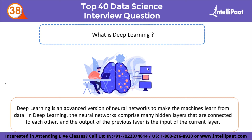What is deep learning? Deep learning is a subset of machine learning which is essentially a neural network with three or more layers. It is an advanced version of neural networks where the neural networks comprise many hidden layers connected to each other, and the output of the previous layer is the input of the current layer. Deep learning teaches computers to do what comes naturally to humans and is a key technology behind driverless cars, enabling them to recognize stop signs, etc.